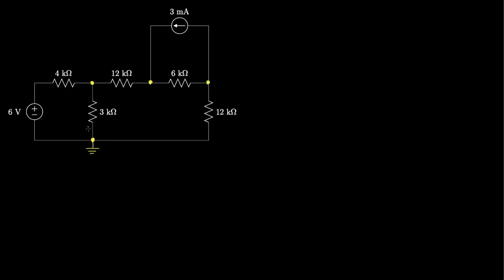We've identified this node as our reference or ground. In the node voltage method, we determine the voltage at each of these nodes relative to our reference node. We'll label each of the remaining nodes with a variable denoting their voltage relative to ground: V1, V2, and V3. At each of these nodes, the next step is to systematically apply Kirchhoff's current law and write a set of equations for each node.